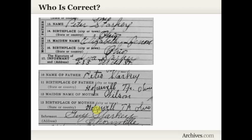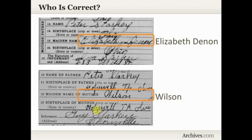Talking about the informant on a death record — here we have a portion of the death certificates for two of Peter's children, a brother and sister. One informant gave the mother's name as Elizabeth Denon. The other informant gave the mother's maiden name as Wilson. Who's correct? To be honest, I don't know yet — I need to do more research. But both of these death certificates have given me clues for names I should be looking for. I need to be looking at Denon families and Wilson families to figure out that last name for Elizabeth, because the informant is different for each sibling's death certificate.